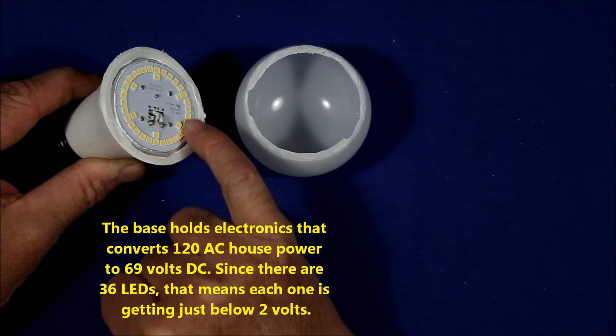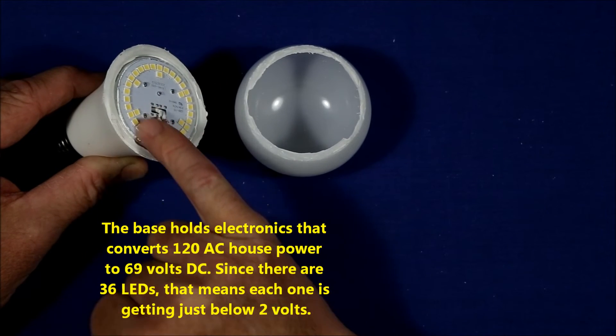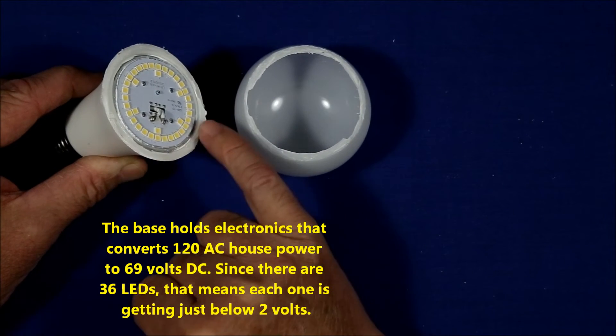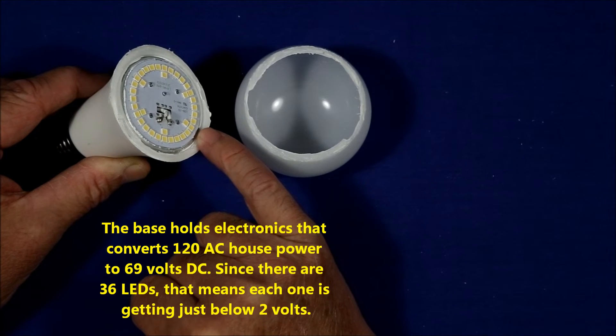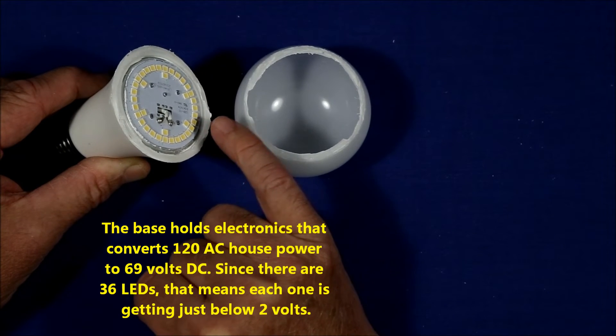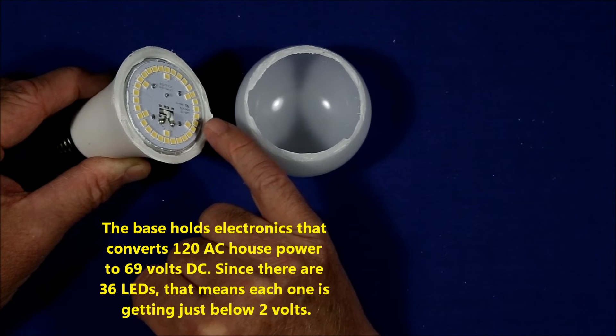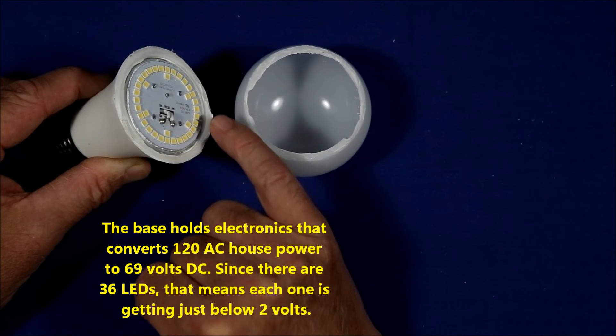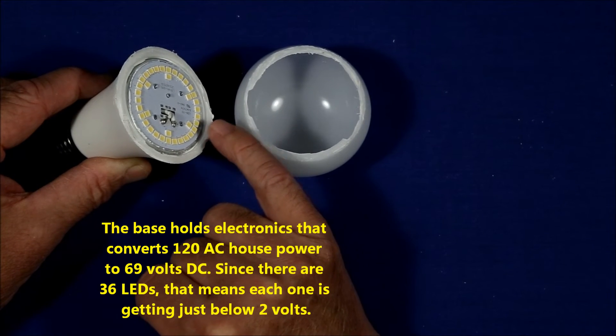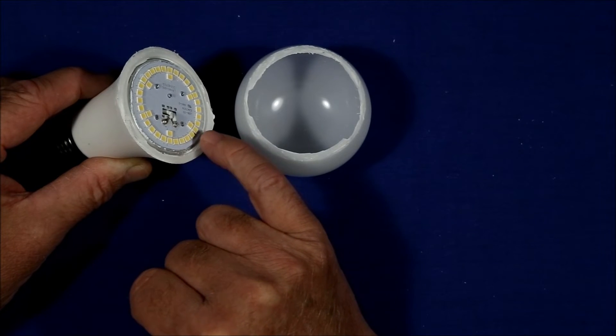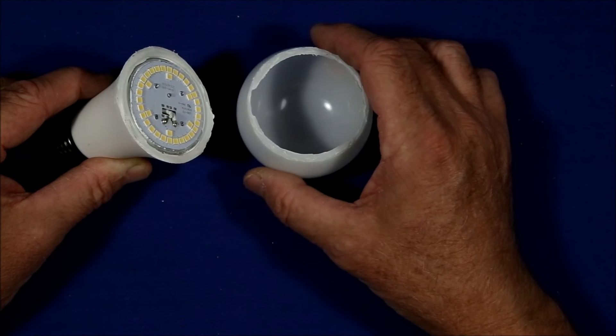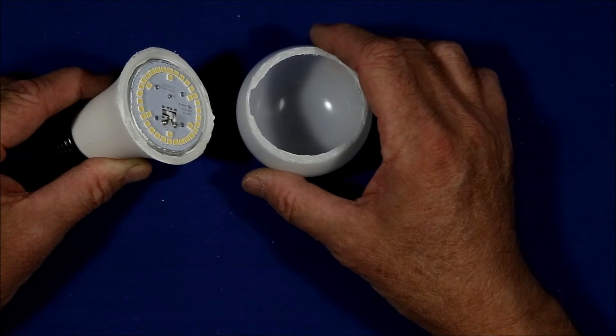The LEDs are these yellow rings, yellow squares and that's what gives off the light. Now, I had expected that when this was fired up, I'd see some reds and some blues and all the primary colors which would mix together to make white, but actually each one of these is a white light emitter. So that's pretty interesting.